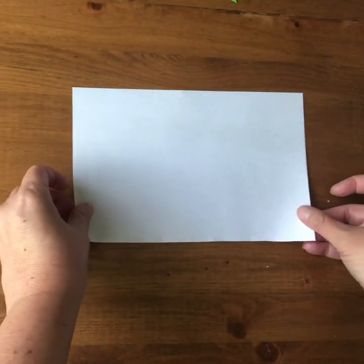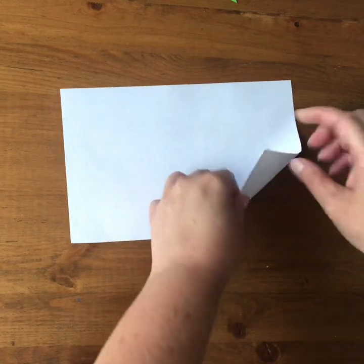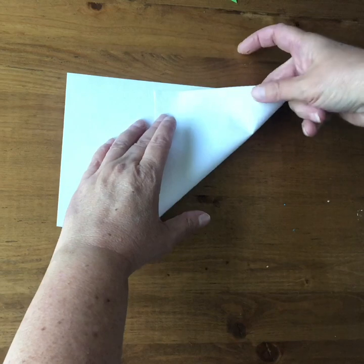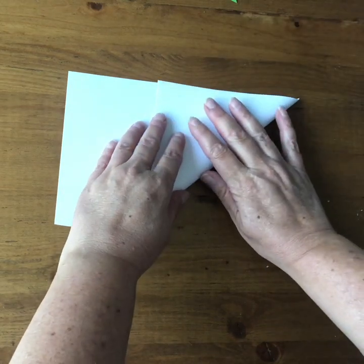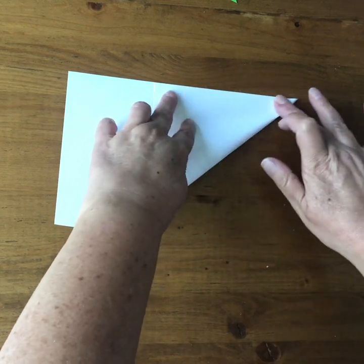And then I take my two rectangles here and I start at this bottom corner and I fold it up. And again, I'm just kind of rolling this here and taking my time to match up the edges along here.